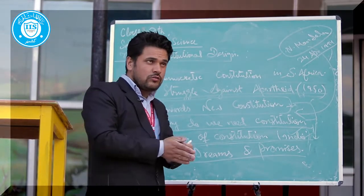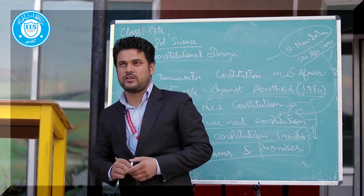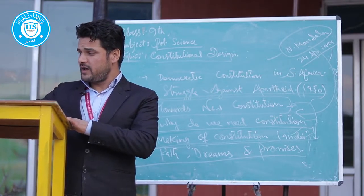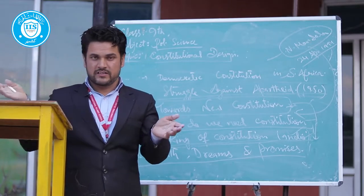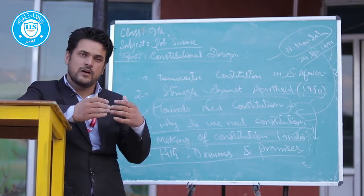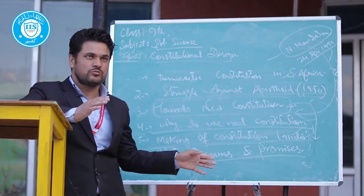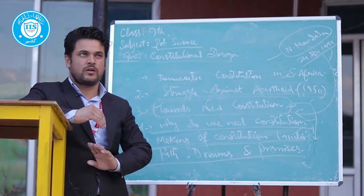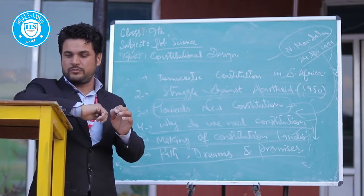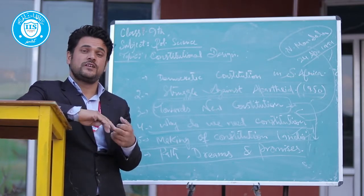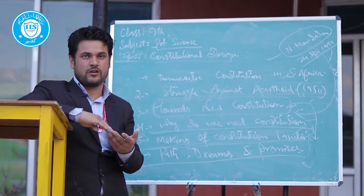1928 mein path of constitution ko follow kiya gaya. Isme sabse bada kirdar Motilal Nehru ne nibhaya, Motilal Nehru ke saath baqi members ya leaders the jo Congress Party se belong karte the. Unhone milke ek programme banaya ki hume kis tarah India ki constitution ko draft karna chahiye. 1931 mein Karachi session mein bhi discuss kiya gaya ki independent India ki constitution kaisi honi chahiye. Constituent assembly baar baar milti rahi, soch vichar kiya gaya. In the end, do bodies banani padi: ek Constituent Assembly — jiska head Rajendra Prasad ko rakha gaya — aur Drafting Committee, jiska chairman Dr. Bhimrao Ambedkar ko banaya gaya.